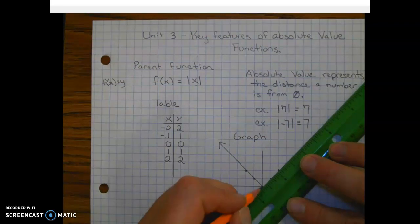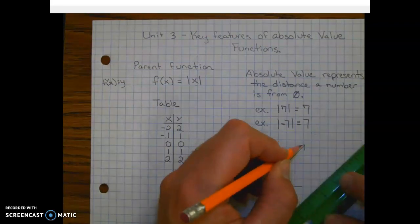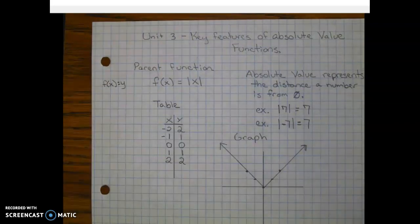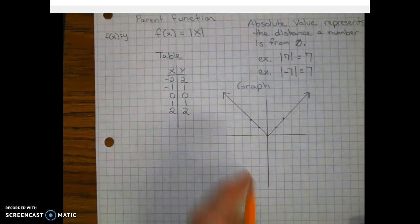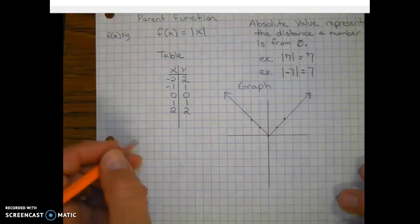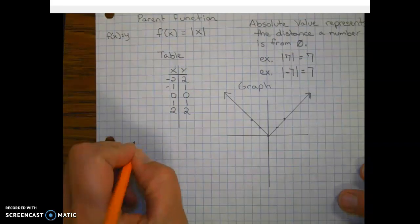that our function looks like a v. Absolute value functions look like a v. And we put arrows on the ends. So let's talk about the key features of this function. So looking at this parent function, let's start off with the domain and the range.